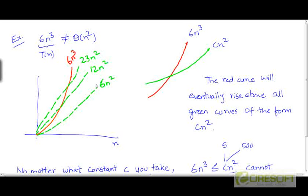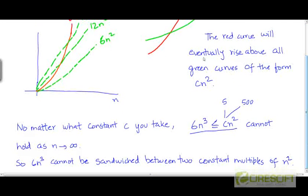So all these functions, 6n², 12n², 23n², they are all representing functions that are growing at the rate of n². And our given function T of n is growing much faster than all of these functions. And so it's not theta of n².